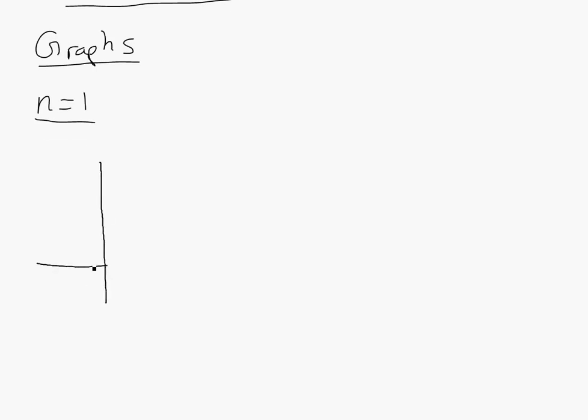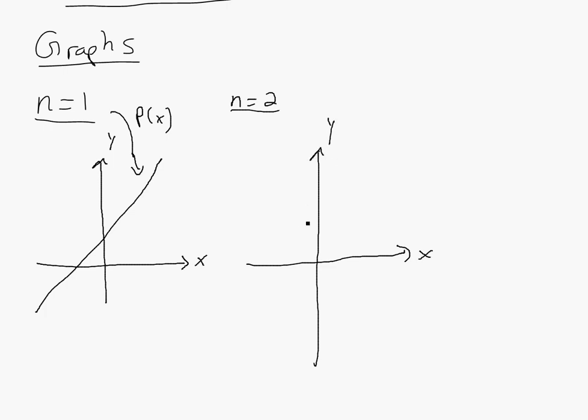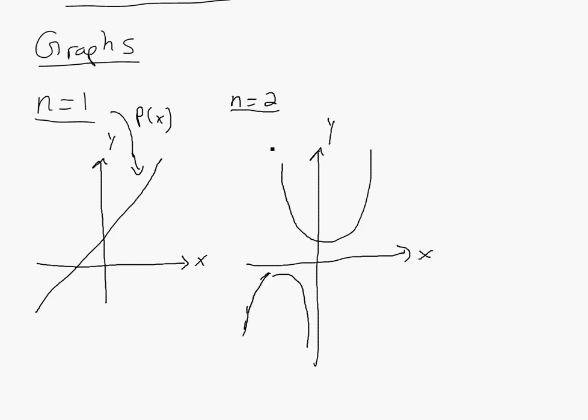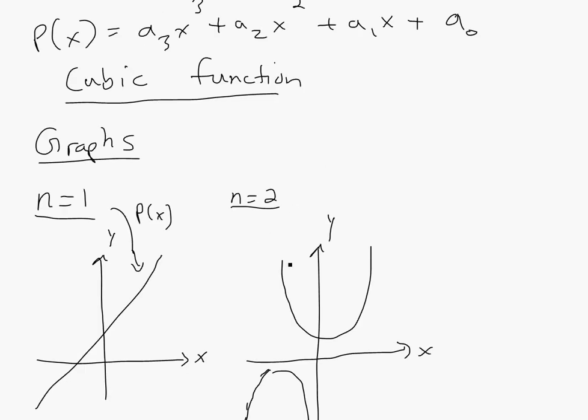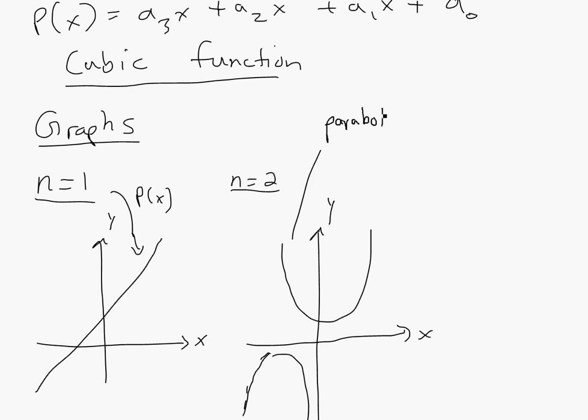If you look at the graphs of them, for n equals 1, it's this linear, so it's just something like this. That's p of x. For n equals 2, it's just a parabola. It could be like that, or it could be even downward, or it could be like that, depending on the coefficients. So this is just a parabola.